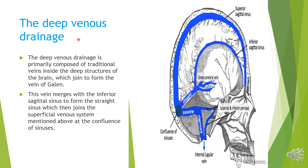The deep venous drainage is primarily composed of tributarial veins from the deep structures of the brain. They together form the vein of Galen. All veins from the deeper part of the brain together form the vein of Galen, also called the great cerebral vein.